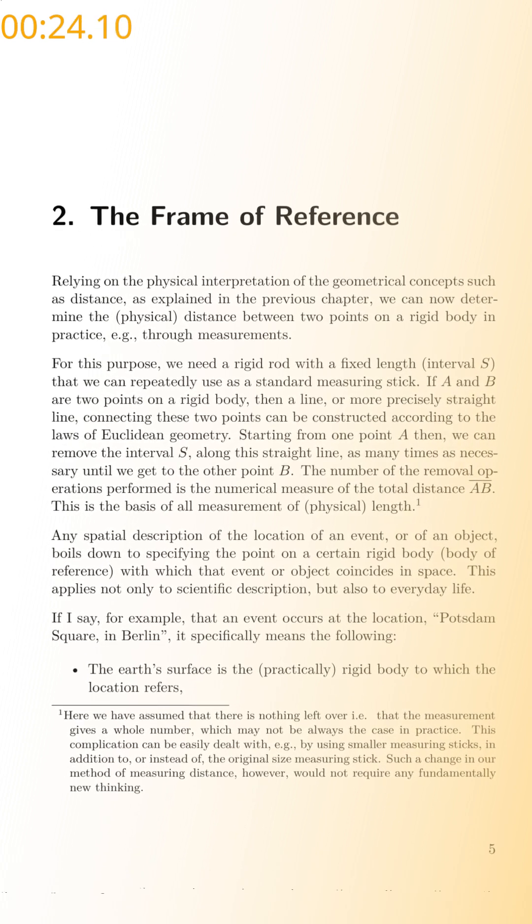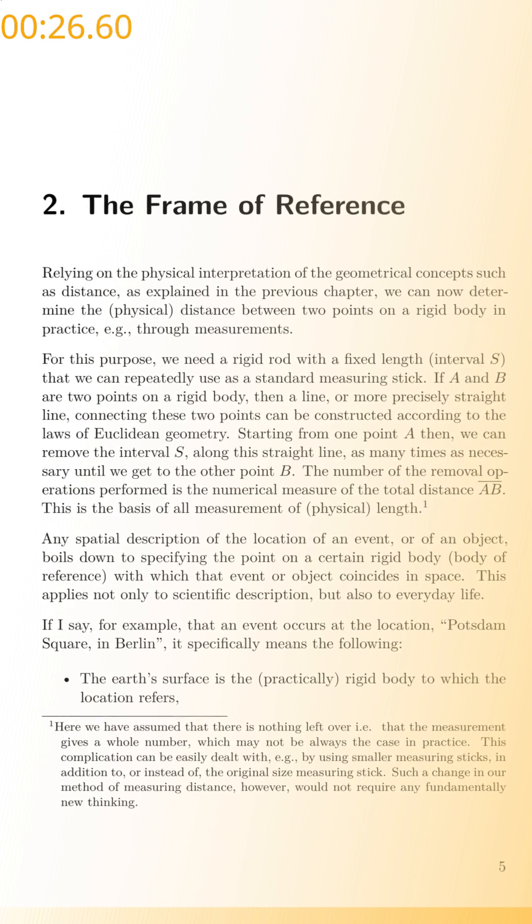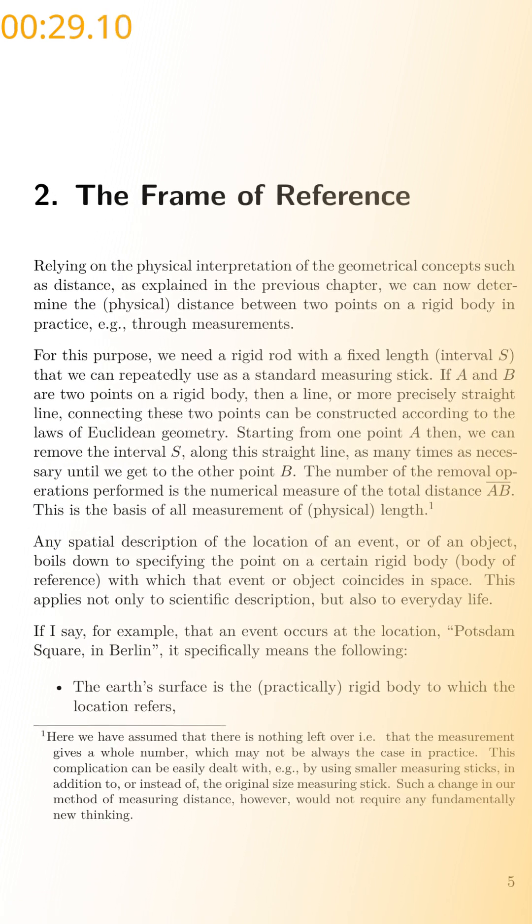For this purpose, we need a rigid rod with a fixed length interval S that we can repeatedly use as a standard measuring stick. If A and B are two points on a rigid body, then a line or more precisely straight line connecting these two points can be constructed according to the laws of Euclidean geometry. Starting from one point A then,